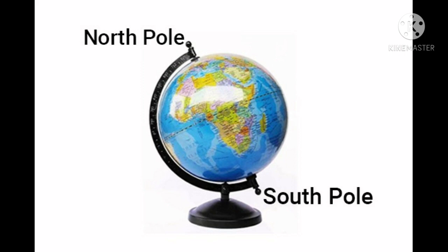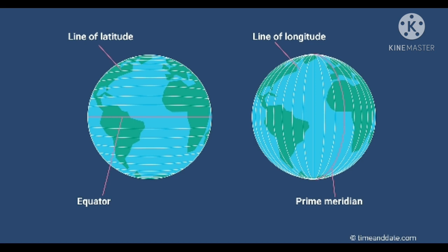The North Pole is at the top of the globe and the South Pole is at the bottom of the world. Latitude and longitude are a system of lines used to describe the location of any place on Earth. Lines of latitude run in an east-west direction across Earth. Lines of longitude run in a north-south direction. Although these are only imaginary lines, they appear on maps and globes as if they actually existed.